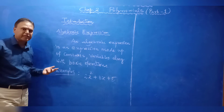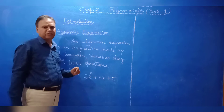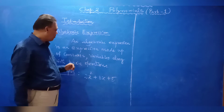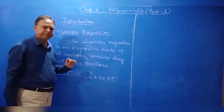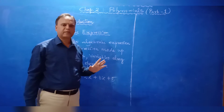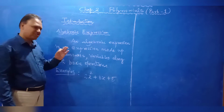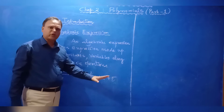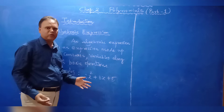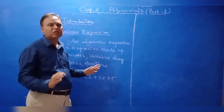An algebraic expression is an expression made up of constants and variables along with basic operations. Constant means fixed value — the value does not change. Two means two only, seven means seven only. You cannot change the value. All numbers are called constants.